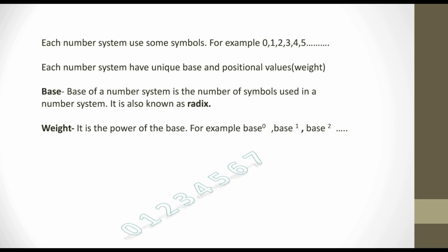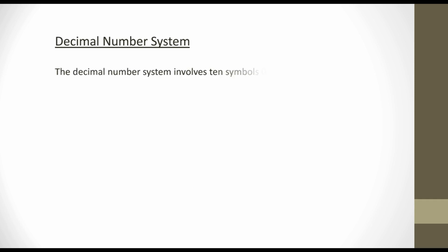Next, what is a positional weight? It is the power of a base. For example, base raised to 0, base raised to 1, base raised to 2. For example, if the base of a number system is 10, then the weights are 10 raised to 0, 10 raised to 1, 10 raised to 2, and so on.